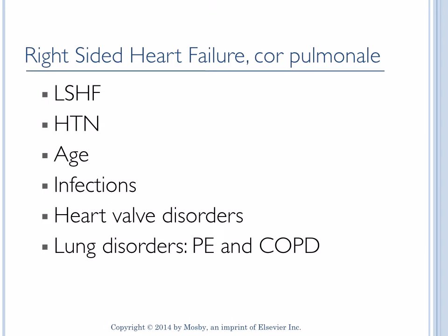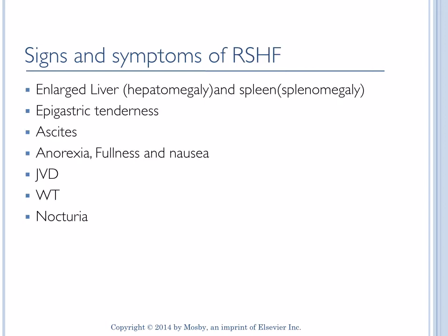Lung disorders — COPD and PE — can cause very high pressure in the lungs and lead to right-sided heart failure. Any disease that causes hypoxia will cause blood pressure in the lungs to go up, which is known as pulmonary hypertension. Due to these lung disorders, there is very high pressure in the lungs, which slowly damages the right side of the heart, leading to right-sided heart failure.